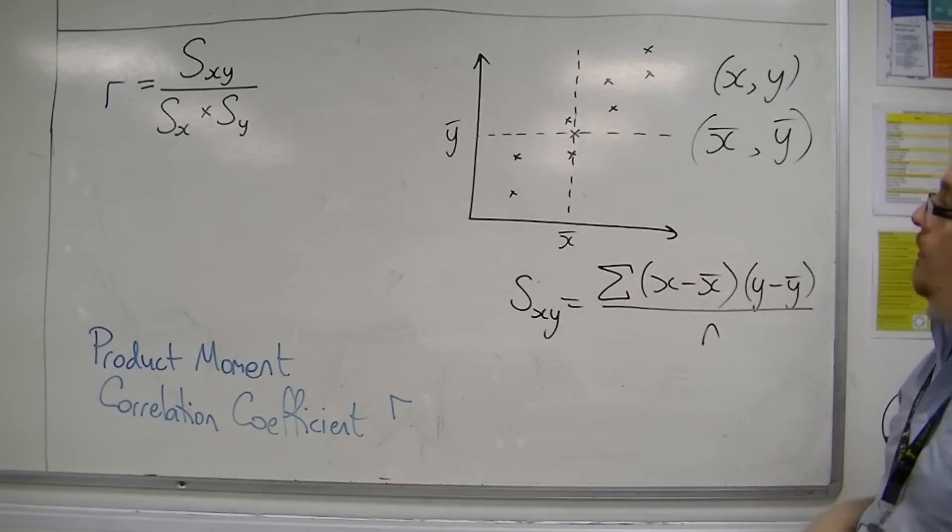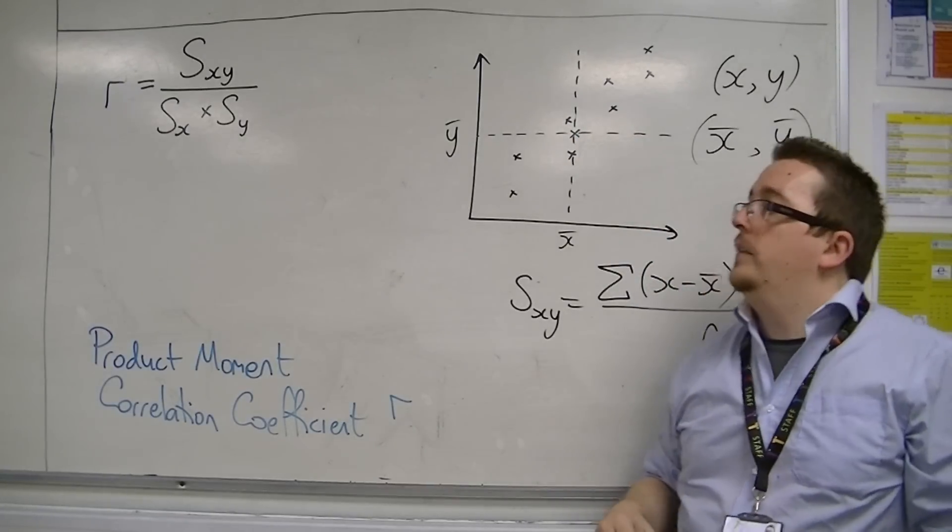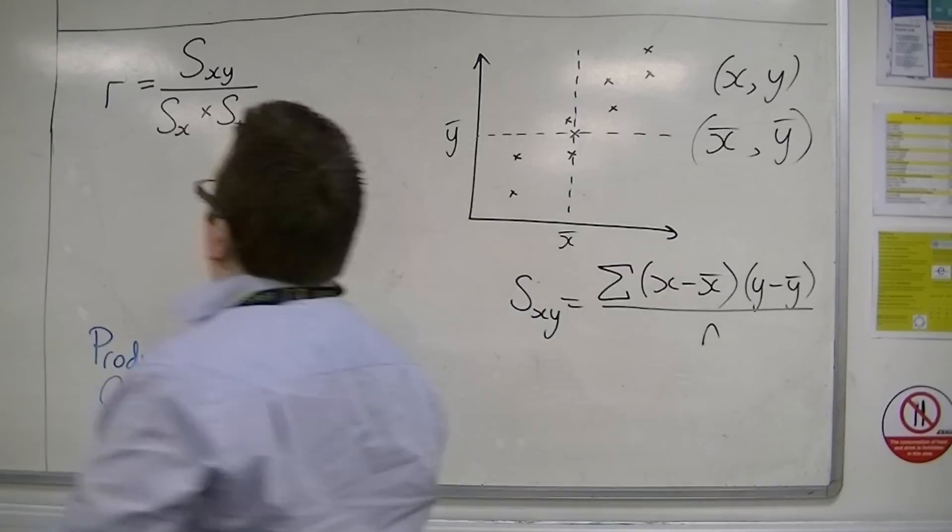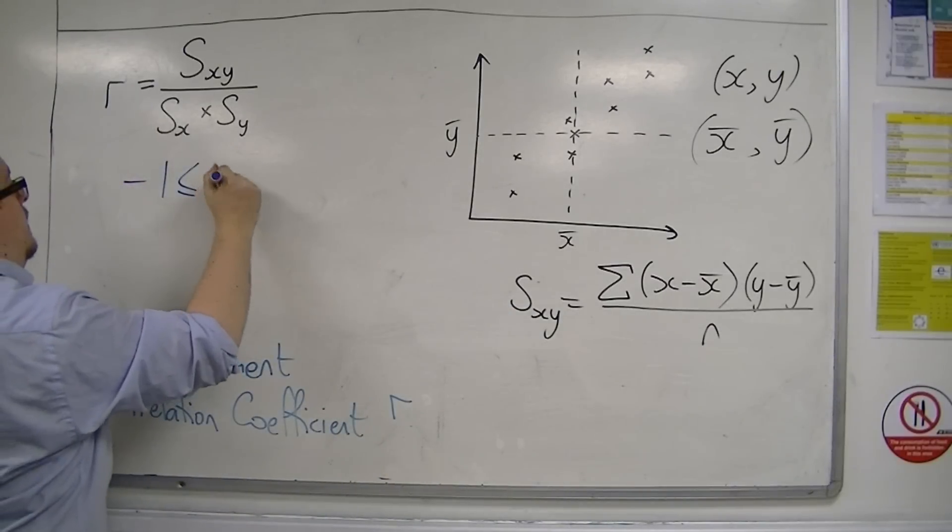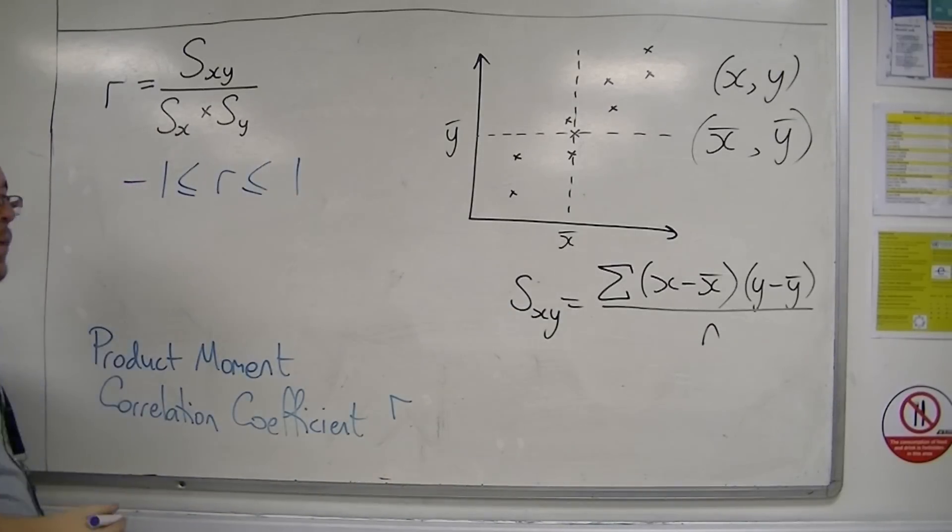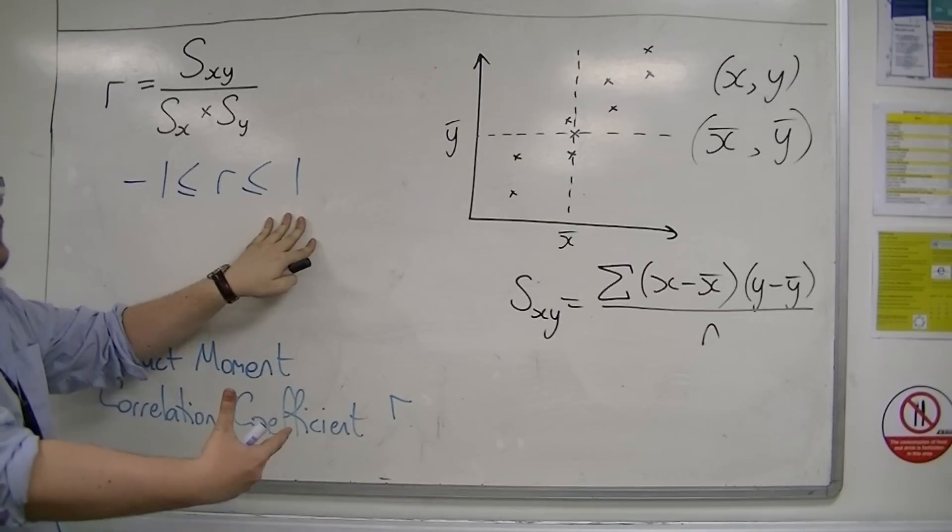This is kind of like roughly where it's coming from. And we now know that r is going to be between minus 1 and 1. The closer it is to minus 1, the more negatively correlated it is, and the closer you are to 1, the more positively correlated it is.